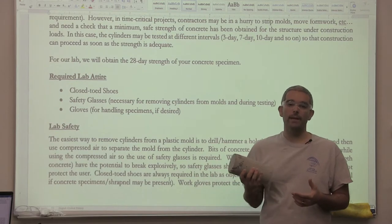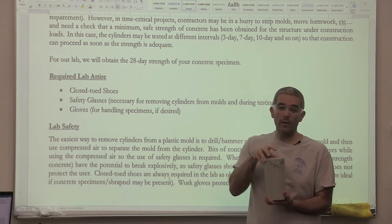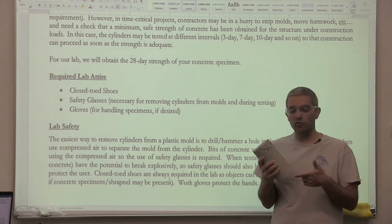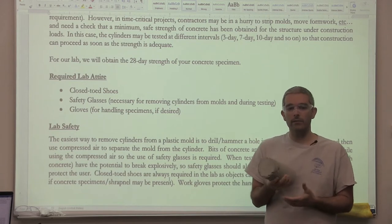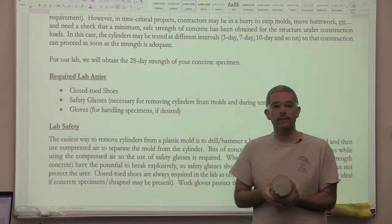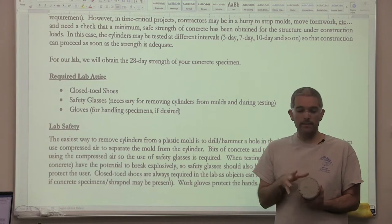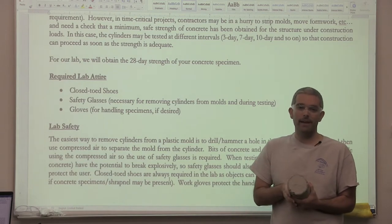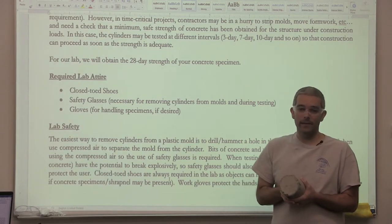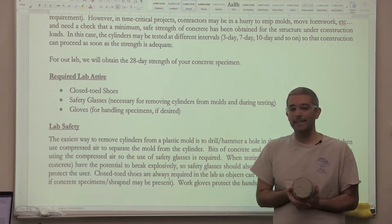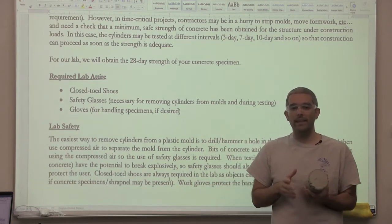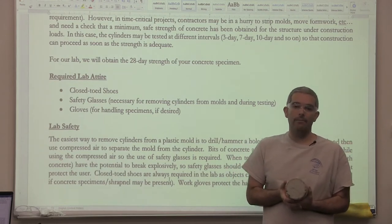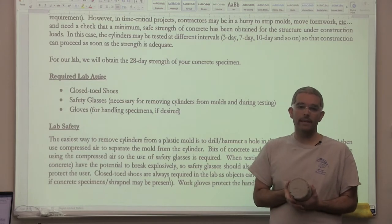The most important time is when we are demolding the specimens. The easiest way to demold the specimen is to drill a hole in the bottom of your cylinder and we use the compressed air hose to kind of pop it out of the cylinder. When we do that, bits of concrete will go flying and it's very easy to get it in your eye. So I definitely recommend having the safety glasses on during that stage, and then of course as we test them if they're high strength they could explode. We have the possibility of getting fragments in our eyes at that point. So at all times in this lab please have your safety glasses on.